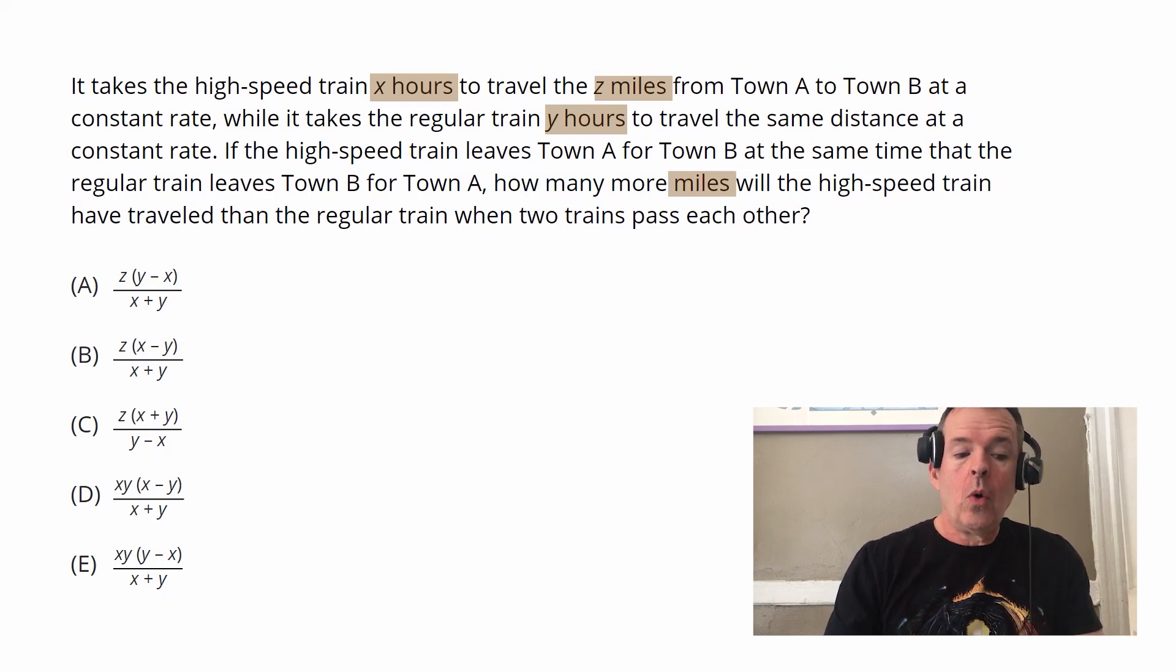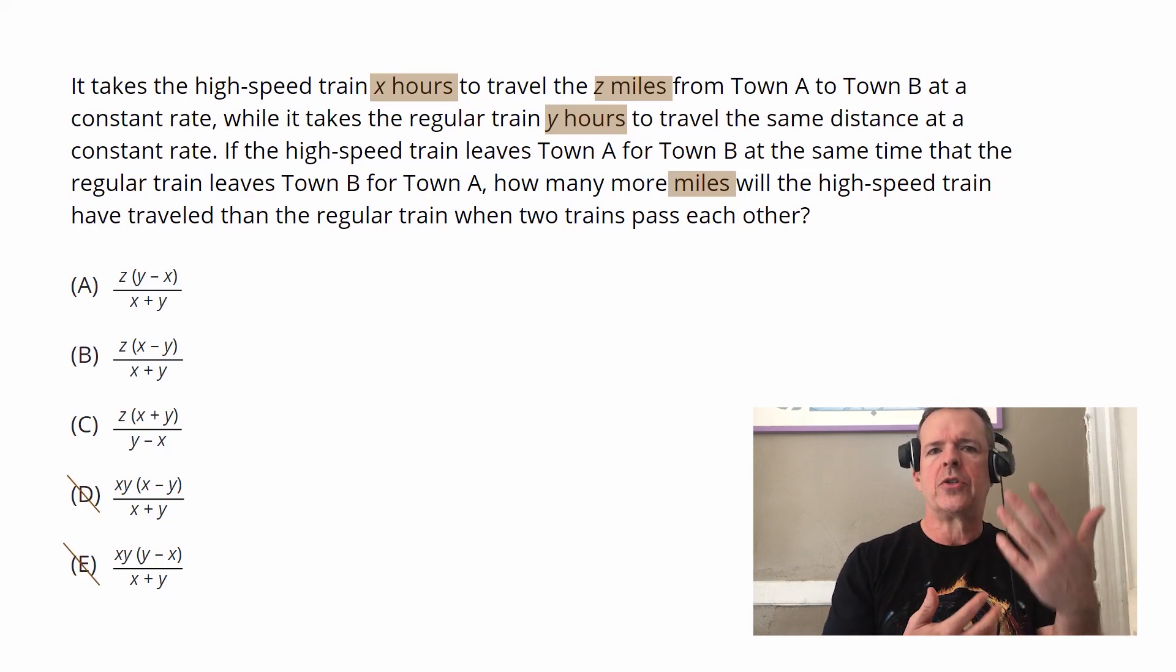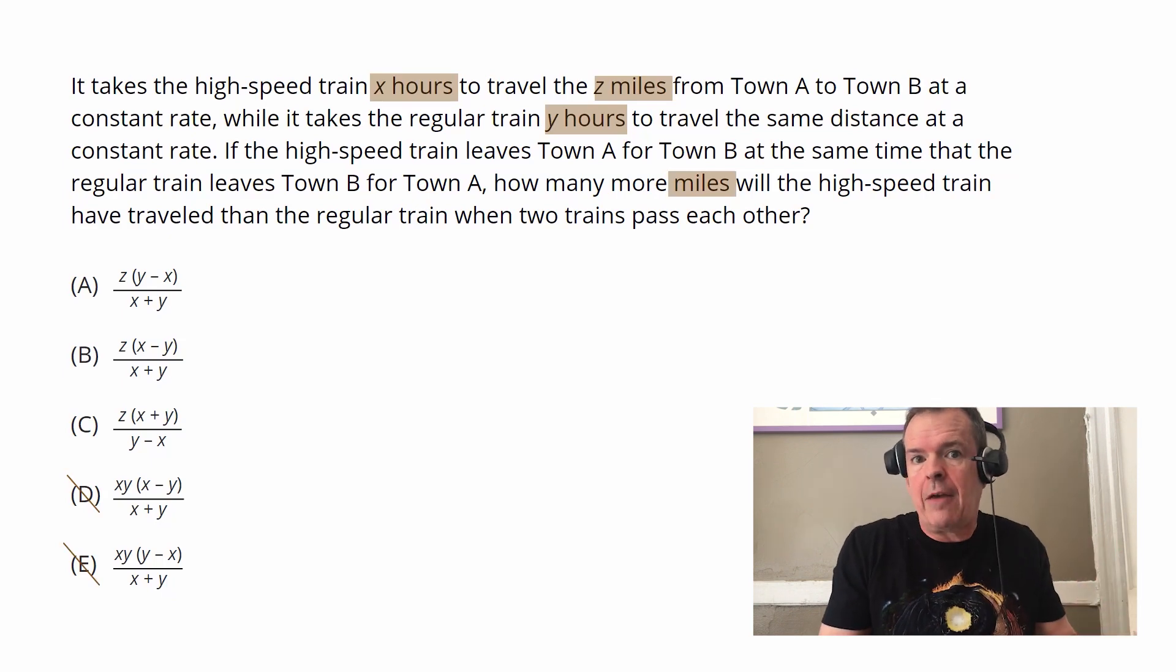And so realizing that Z is the only variable that has miles attached to it, notice that answer choices D and E actually don't even have Z. So there's no miles to be captured in those answer choices. It's purely in terms of hours. Those can't be it.